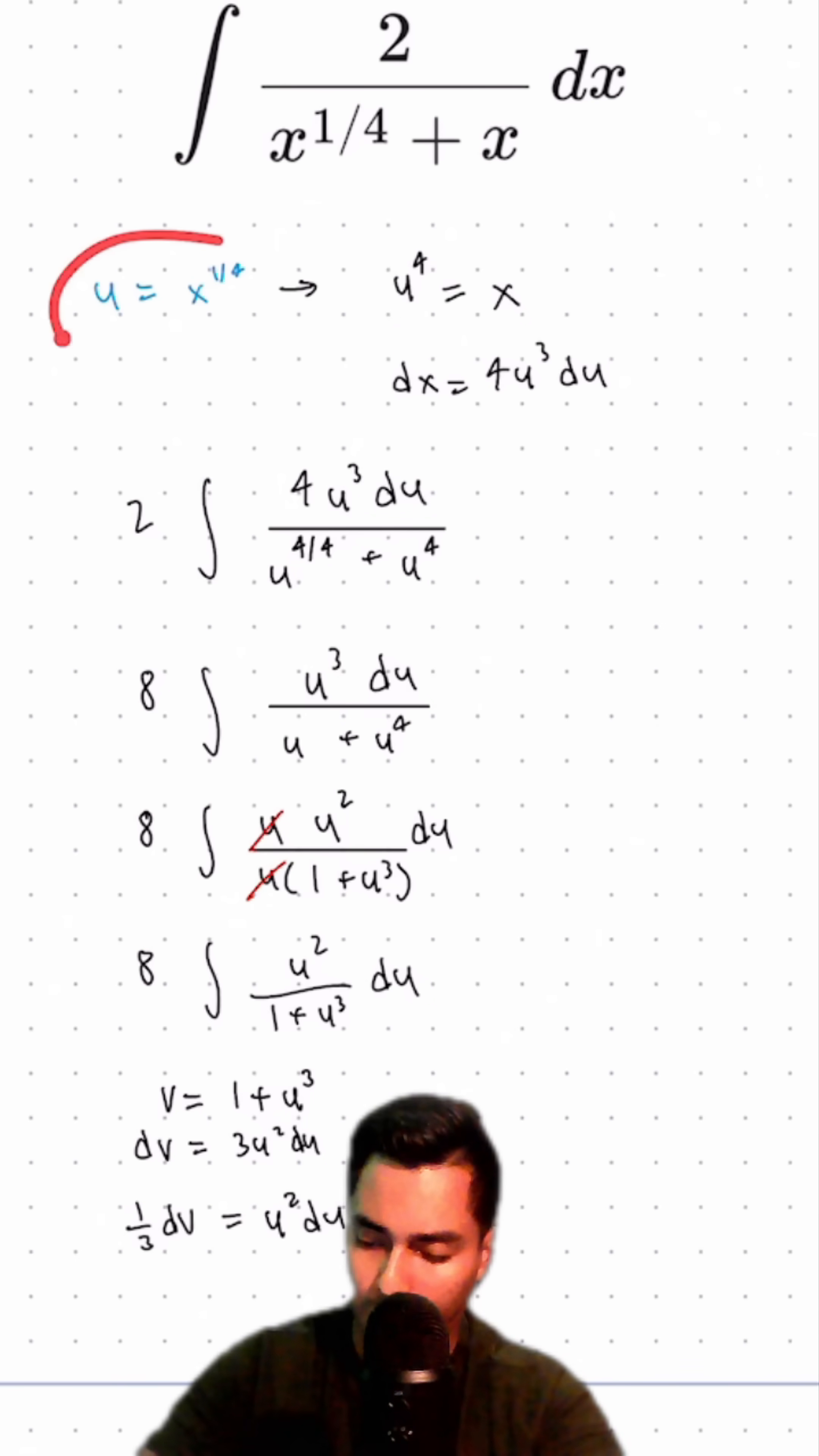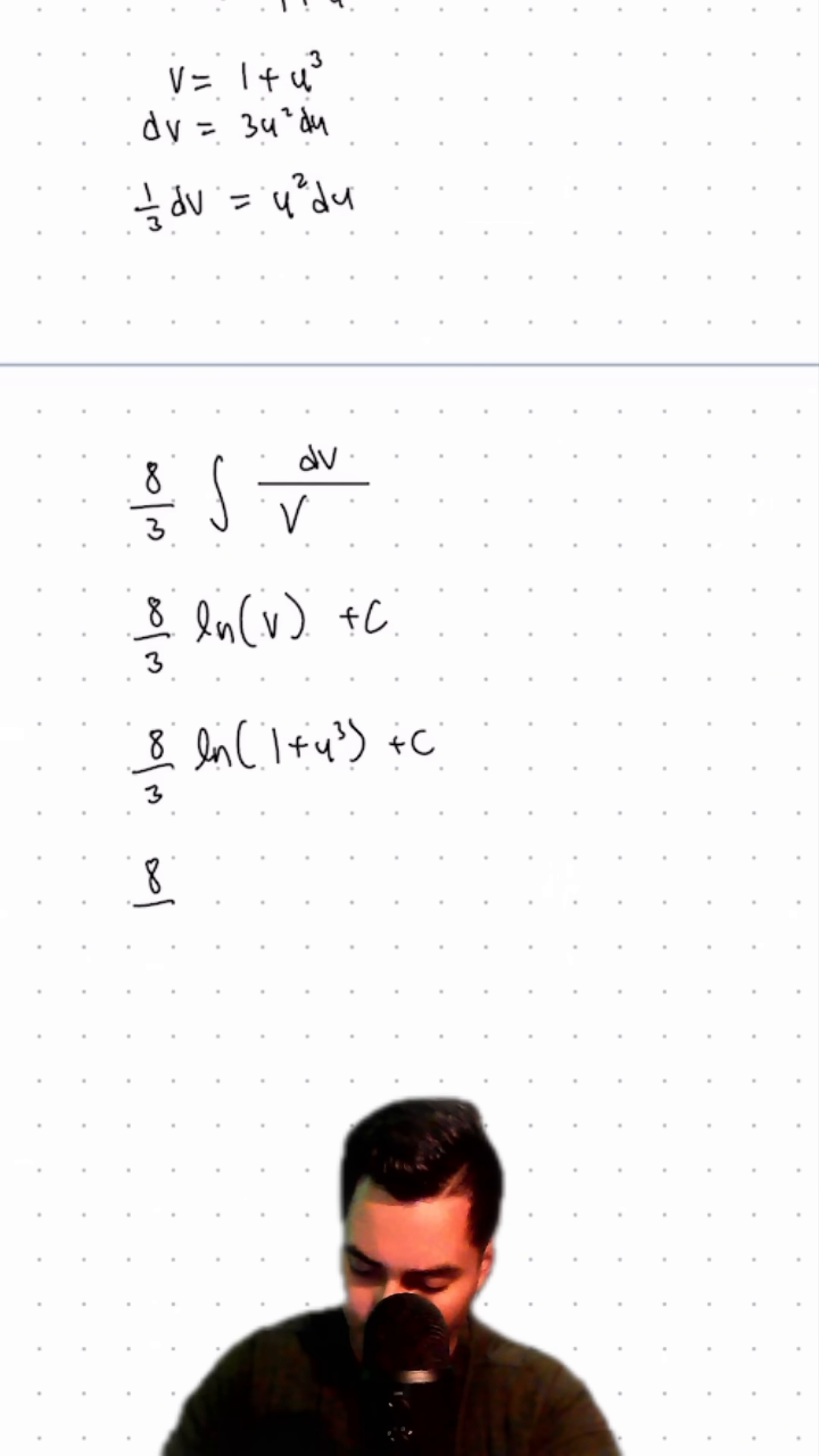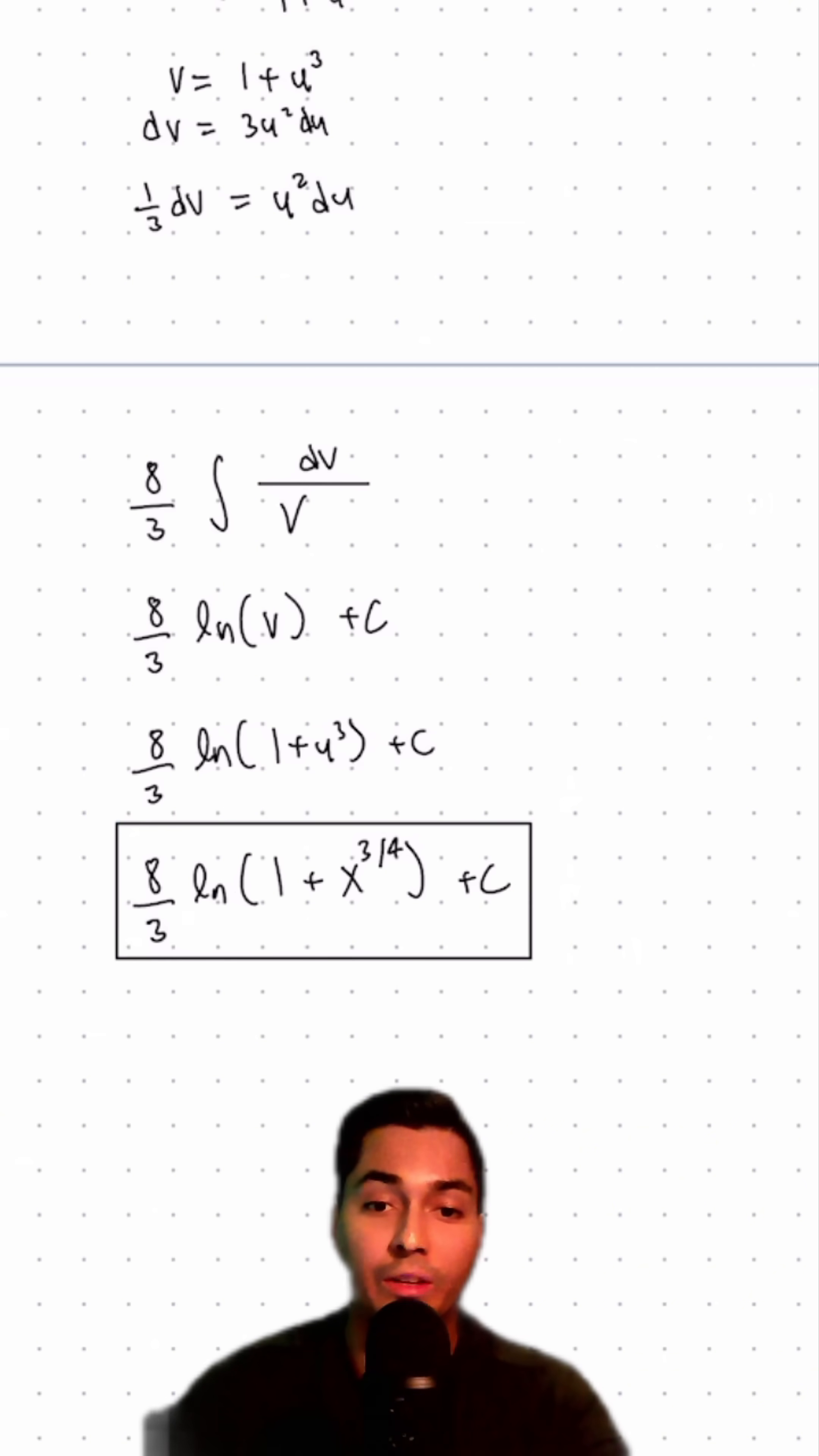Our u was originally x to the 1/4. This simplifies further to 8/3 times the natural log of 1 plus x to the 3/4 plus c. Our final answer is 8/3 times the natural log of 1 plus x to the 3/4 plus c.